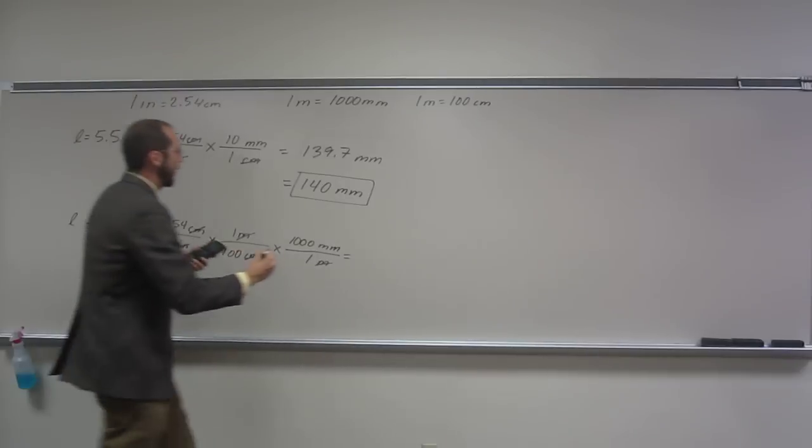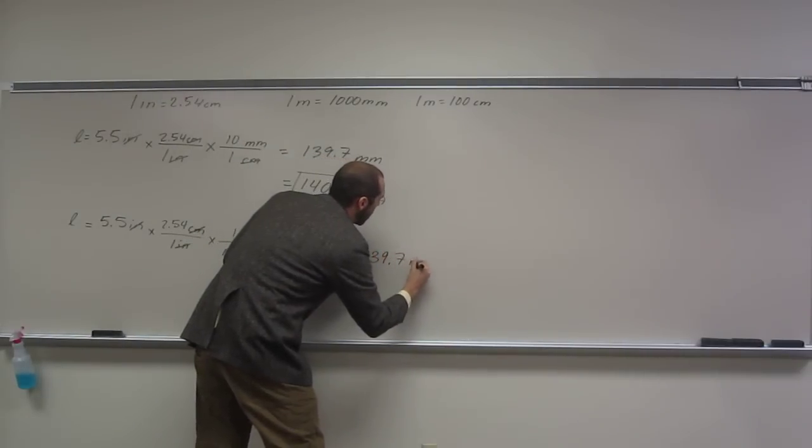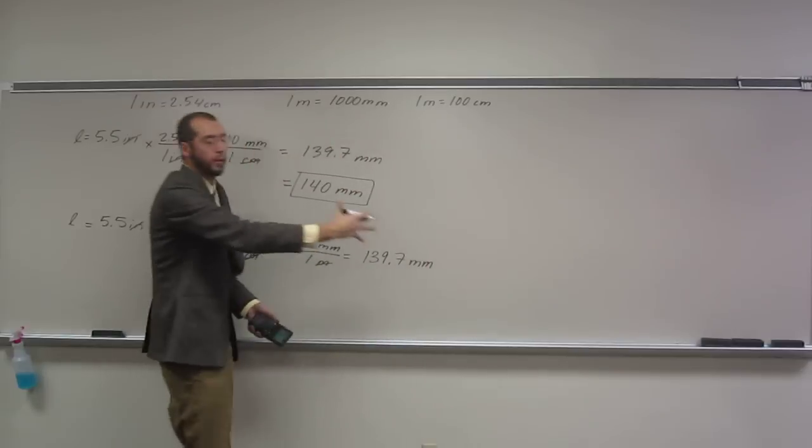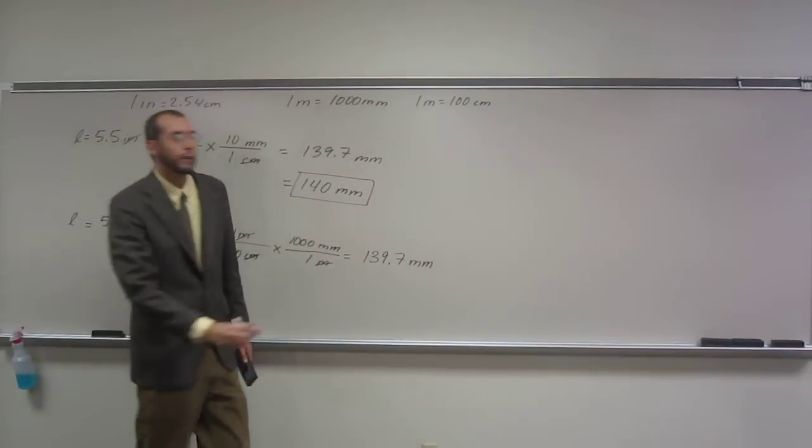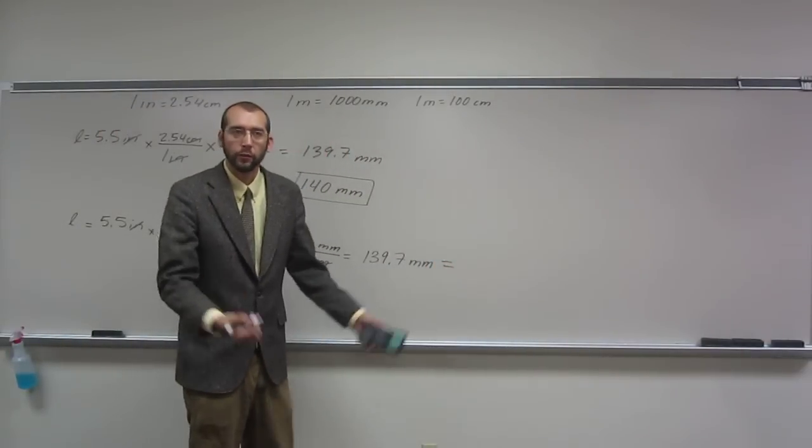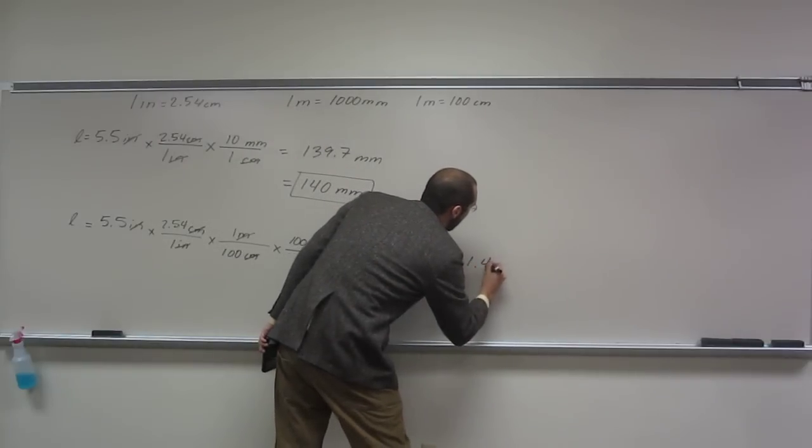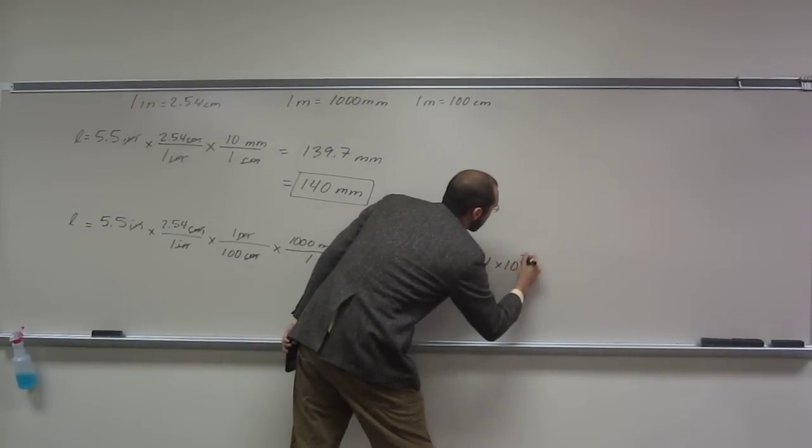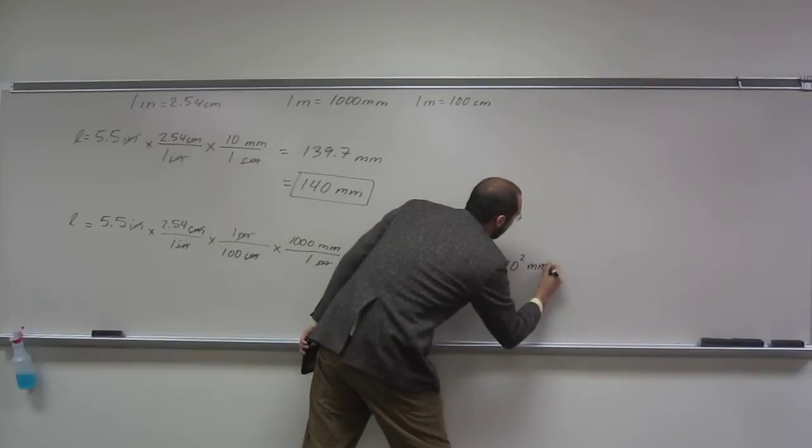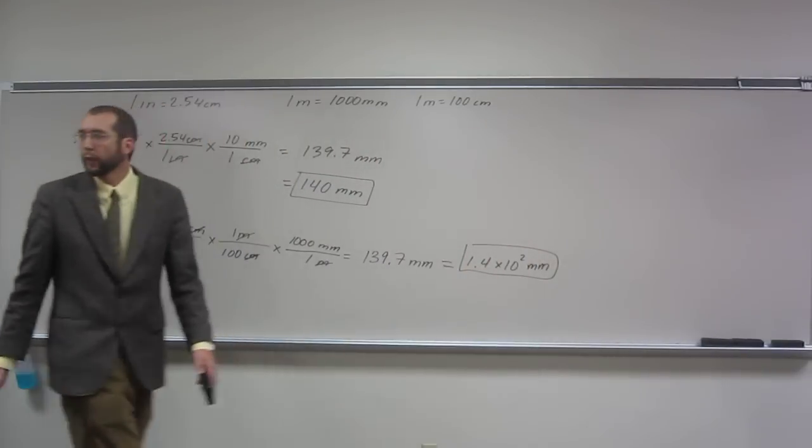And I got 139.7 millimeters. And of course, again, that's got too many sig figs. So let's do this time in scientific notation. When we do that, we want two sig figs, 1.4 times 10 squared millimeters. Either way is the correct answer.